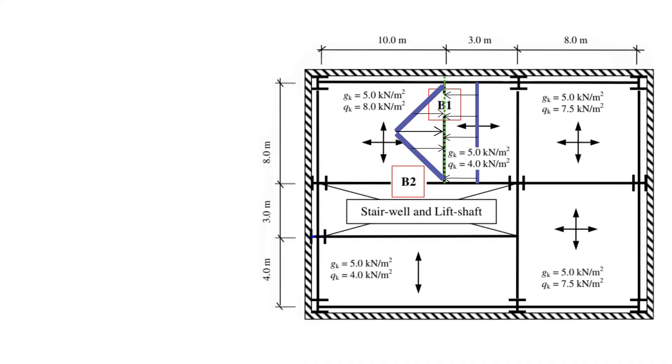To make sure our beam can handle this without any trouble, we do some math magic. We take 1.4 times the dead load, which is just the weight of the building materials, and then add 1.6 times the live load, which includes the weight of everything else that might move around, like people and furniture.